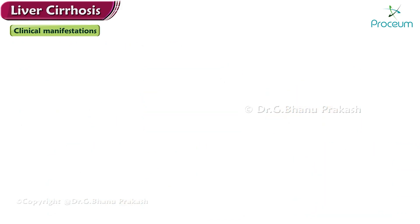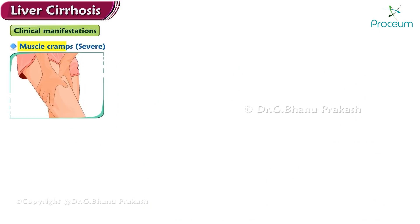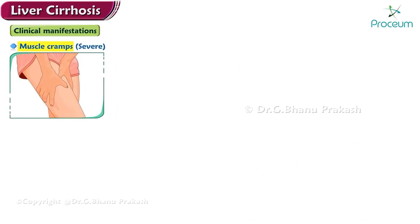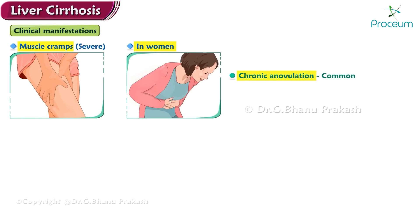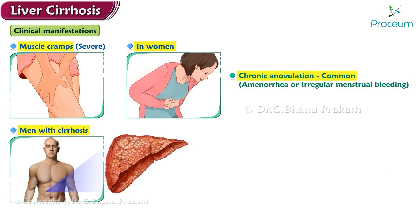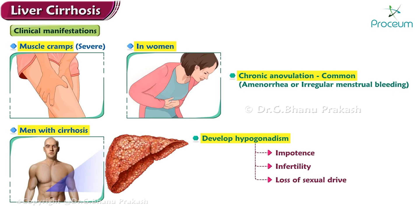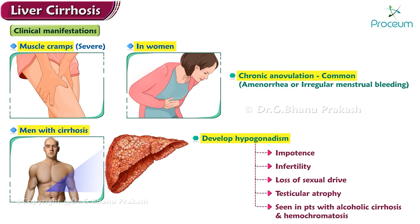Patients with cirrhosis may experience muscle cramps, which can be severe. In women, chronic anovulation is common, which may manifest as amenorrhea or irregular menstrual bleeding. Men with cirrhosis may develop hypogonadism, manifested by impotence, infertility, loss of sexual drive, and testicular atrophy. This is a feature seen predominantly in patients with alcoholic cirrhosis and hemochromatosis.